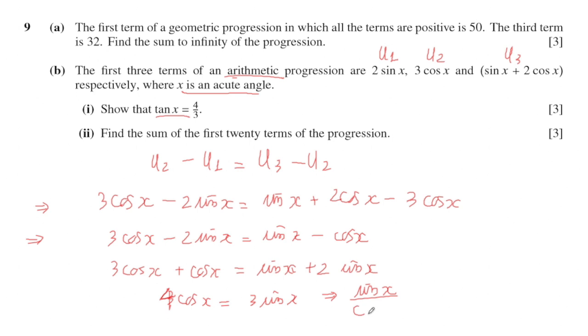So you can get 4 cos x equals 3 sin x. The tangent of something will be sin over cos, so from this ratio you can get sin x over cos x equals 4/3. Therefore, tan x equals 4/3.